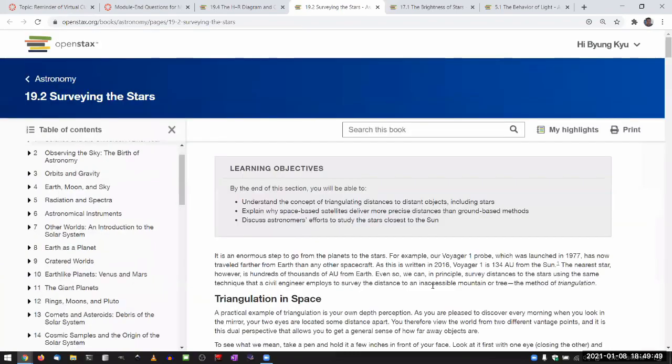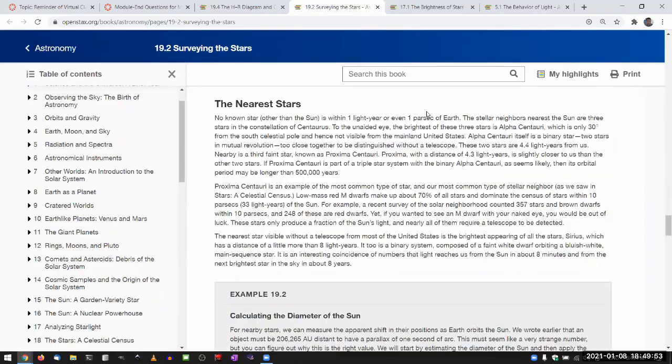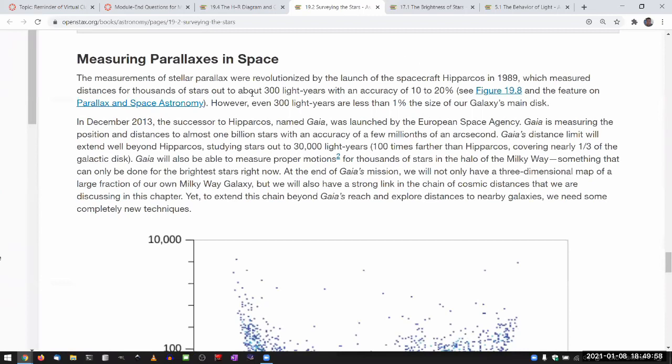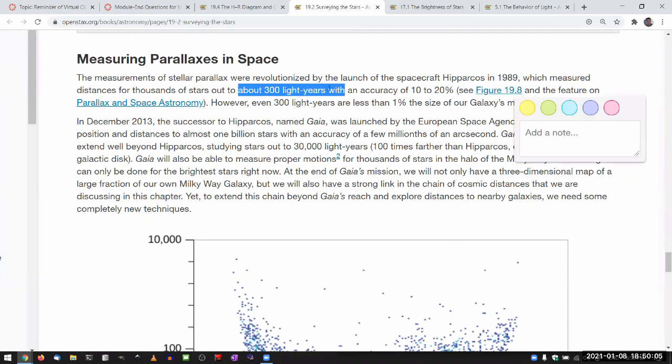So, parallax is a method that can be used to measure objects that are fairly nearby. And the piece of information that is important to hear is what they tell you. The HIPPARCOS mission measured the stars out to about 300 light years, so that's a reasonable distance to be measured using parallax.